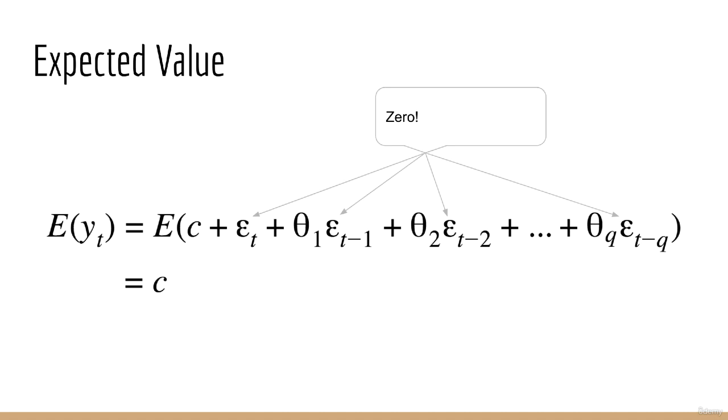Here's one way to think of the moving average model that might help you rationalize its name. Consider what the expected value of Y should be. As you know, we treat errors as normals with mean 0 and variance sigma squared. Well, if we take the expected value of Y of T, we simply get C, since the expected value of each of the errors is 0. Hence, we can think of the bias term C as the average value, and then each of the errors as fluctuations that make Y of T go up or down around C.